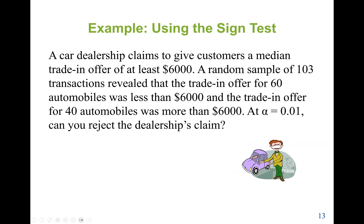Using the sign test, here is another example. A car dealership claims to give customers a median trade-in offer of at least $6,000. A random sample of 103 transactions revealed that the trade-in offer for 60 automobiles was less than $6,000, and 40 automobiles were more than $6,000. The remaining 3 were equal to $6,000 and are omitted. The alpha value is given. Can we reject the dealership's claim?